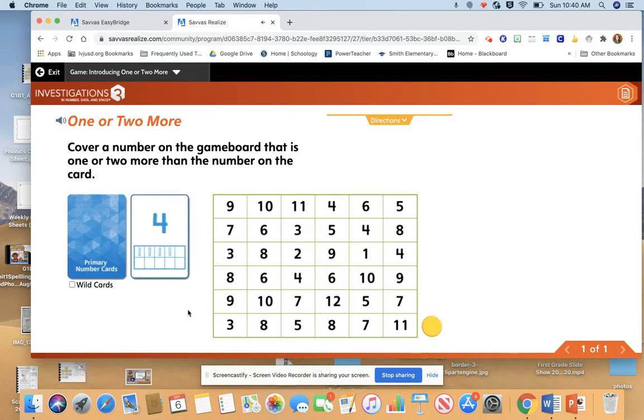Our first number is four. So if I want to add one more than four, I can look down here and see this picture. If I add one more, that's going to be one, two, three, four, five. So I can cover any five on my board. Or I can add two more. If I want to add two more, I'm going to add one, two, and then count. One, two, three, four, five, six. So I can cover any five or any six. I have to decide which one I want to cover. I think I'll cover the corner five right here.